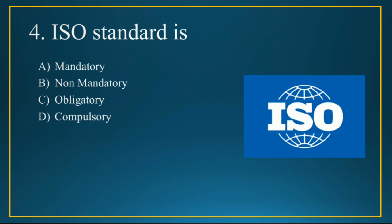Q4: ISO standards are — mandatory, non-mandatory, obligatory, or compulsory? ISO is an independent, non-governmental international organization with a membership of nearly 167 national standards bodies. The standards of ISO are not mandatory; they are voluntary. The head office of ISO is in Geneva, Switzerland.